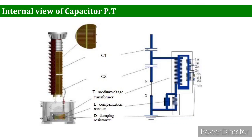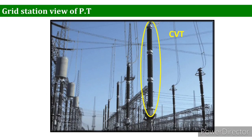As you can see, C1 is capacitor 1 and at the bottom is C2, capacitor 2. T represents the medium voltage transformer and L shows the compensation reactor. D is the damping resistance that controls the voltage levels. This is basically the grid station view of a potential transformer.